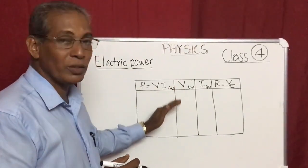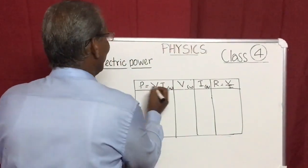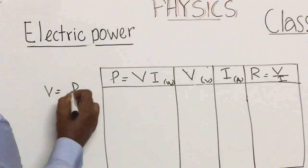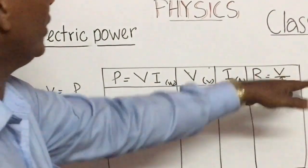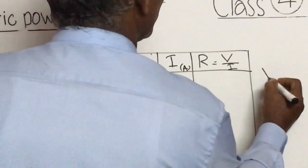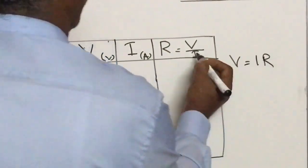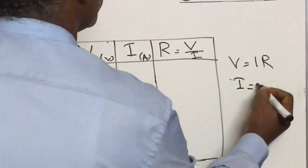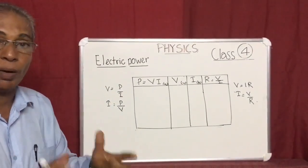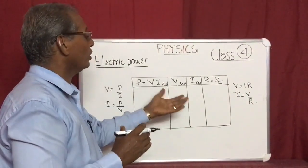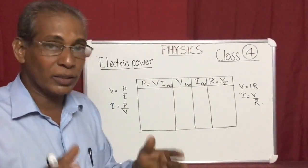Once you set this table, it gives amazing results. From P and VI we can write: V = P/I and I = P/V. From the ratio side: R = V/I, so V = IR and I = V/R. If you remember this much, any problem connected to power and energy you can easily calculate.